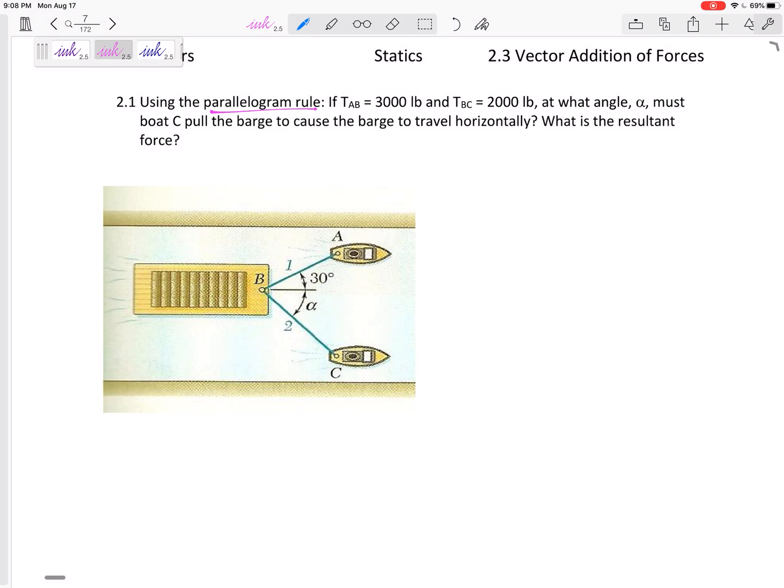Alright, so if the tension in AB is 3,000 pounds and the tension in BC is 2,000 pounds, and you can see that A is pulling it at 30 degrees from there, what angle alpha must boat B pull the barge to cause the barge to travel horizontally, and what is that resultant force?